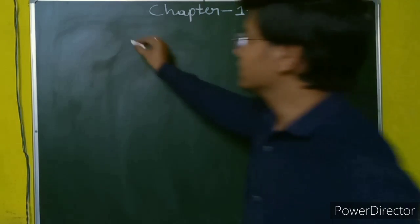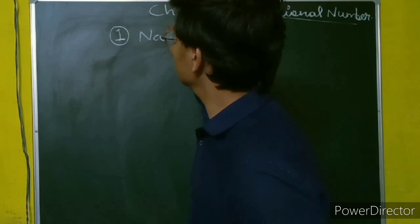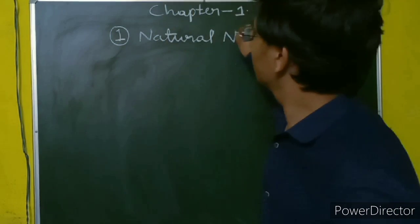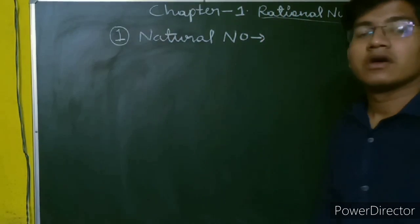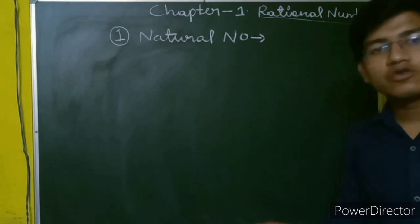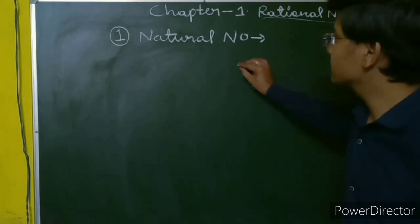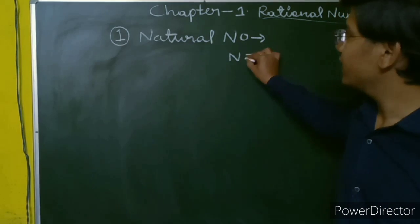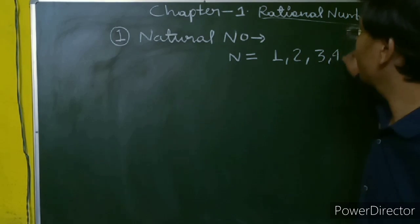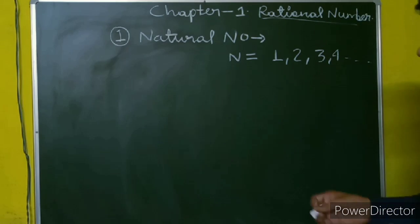The first type of numbers which we have to study are natural numbers. Natural numbers are simply the counting numbers. Natural numbers are represented by N. So we can write N equals to 1, 2, 3, 4 and so on. These numbers are known as natural numbers.